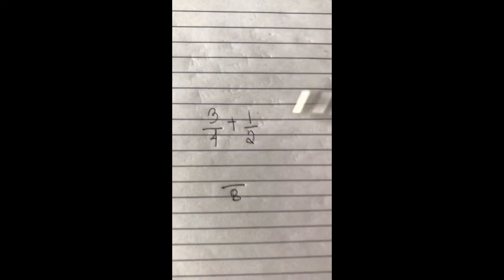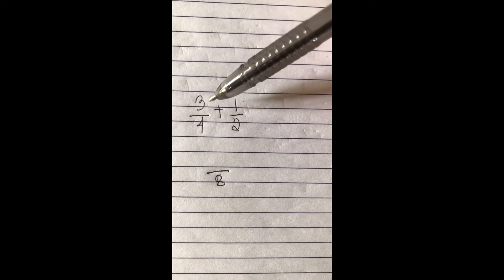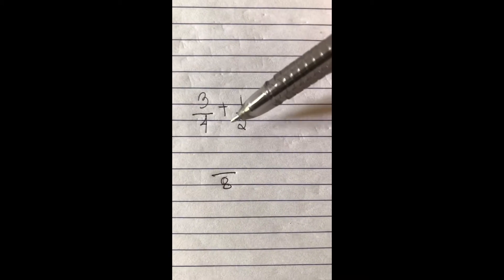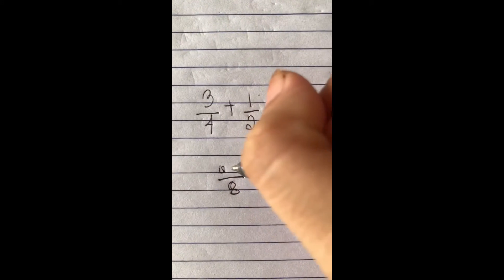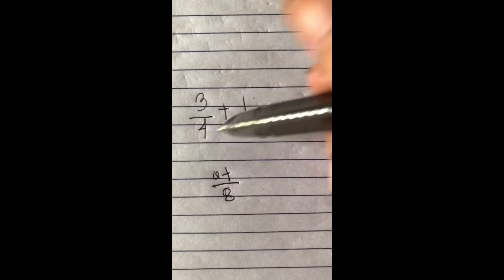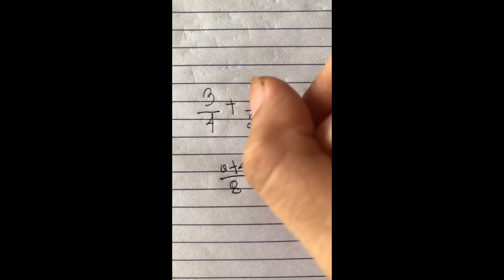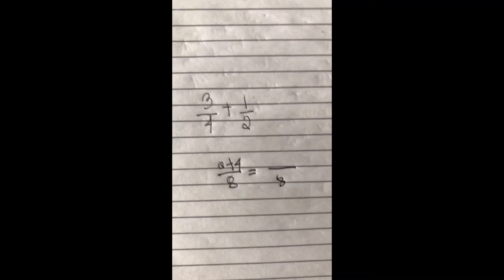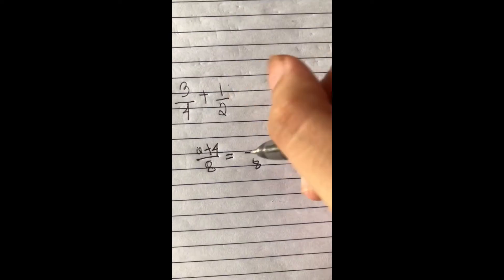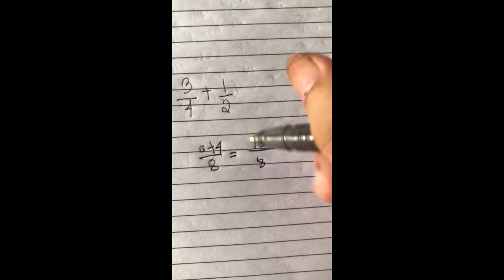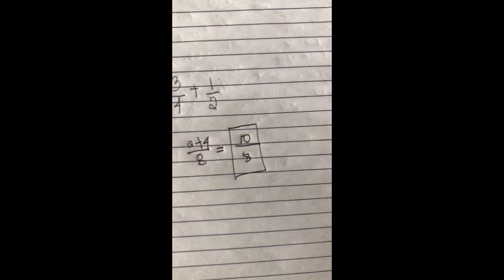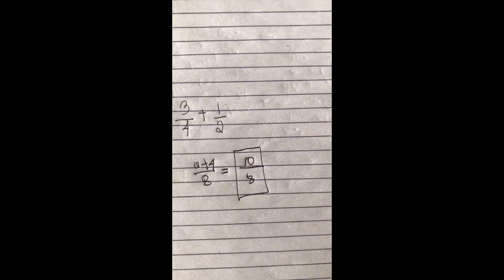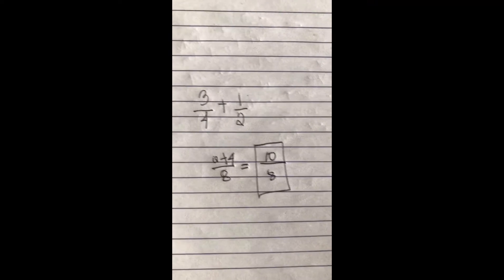And then cross multiply. Multiply 3 times 2, that is 6. 4 times 1, that is 4. So copy the denominator, 6 plus 4 that is 10. So that is our answer. Our answer as an improper fraction is 10 over 8.